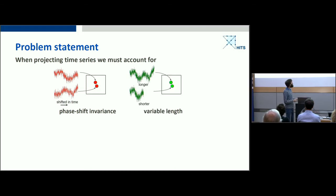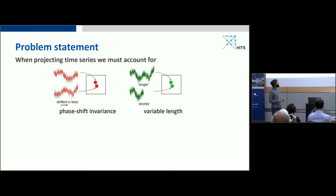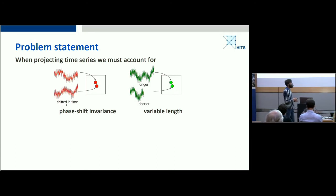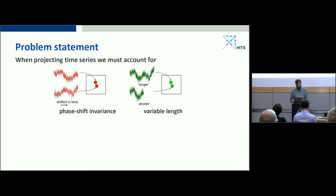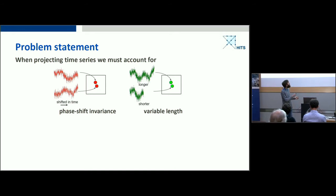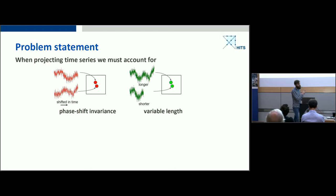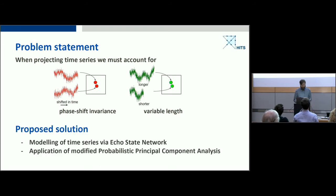Another issue is variable length: you may have a longer time series and a shorter time series, and the length is not necessarily an indication of similarity. The algorithm should understand that even if a time series is shorter, if they are otherwise similar, it should project them close together.